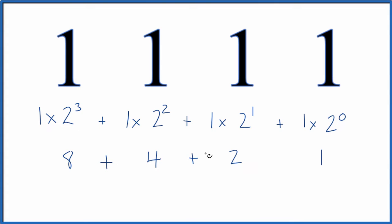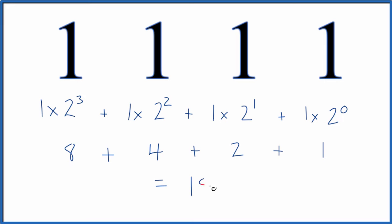We add all of these up. 8 plus 4 is 12. Plus 2 is 14. Plus 1 equals 15. So the binary number 1111 is equal to the base 10 number 15.